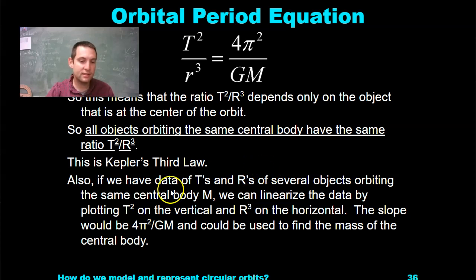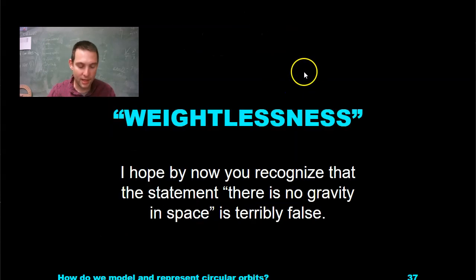Again, the slope of that line is 4π²/GM, because whenever you have a fraction, you can treat that like a slope to figure out what is your y value and x value.